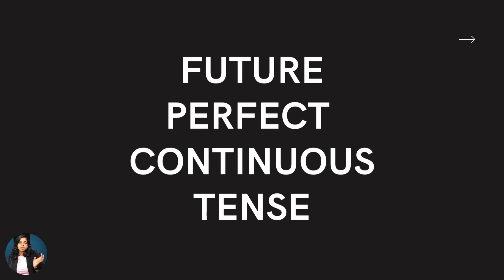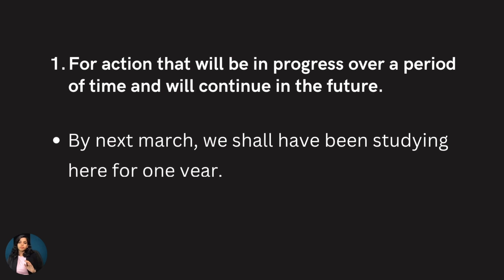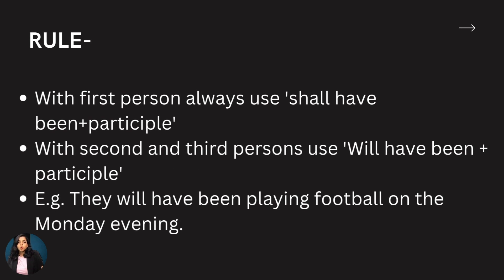Now, future perfect continuous tense. The rule is: will have or shall have plus been plus verb's first form plus -ing and since or for. It is used for an action that will be in progress over a period of time and will continue into the future — for example: by next March, we shall have been studying here for one year. Rule: with first person, always use shall have been; with second or third person, use will have been — for example: they will have been playing football on Monday evening.